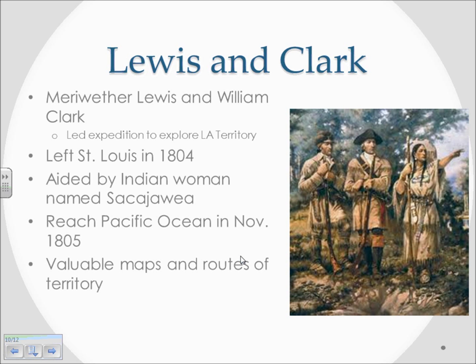When you get new land you have to explore it and find out what's there. This is where you have one of the most famous expeditions in U.S. history: the Lewis and Clark journey. Meriwether Lewis and William Clark led an expedition to explore the Louisiana Territory, leaving in 1804. Accompanying them was a famous Native American woman named Sacajawea, who guided them and helped communicate with the native tribes. They reached the Pacific Ocean in 1805 and sent back to Washington valuable maps and routes of the territory. They had been looking for water passages and other ways to quickly reach the Pacific, and what they provided was very useful.